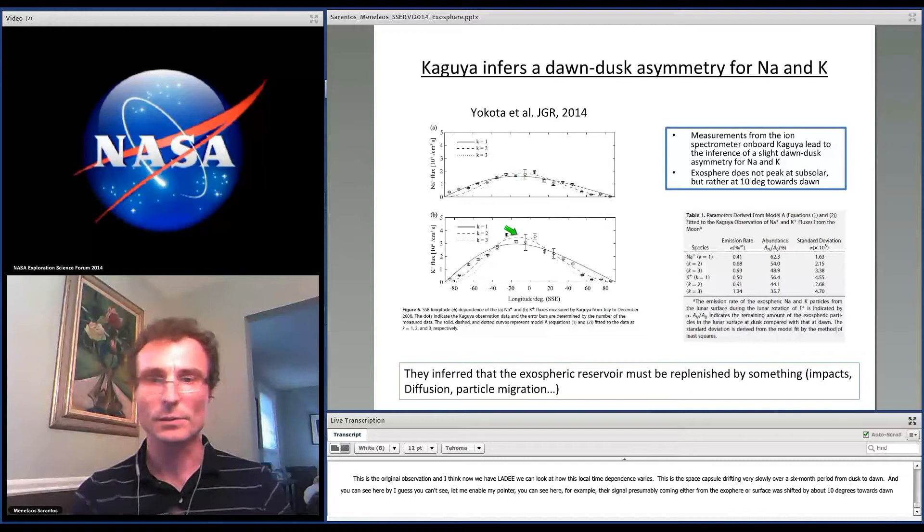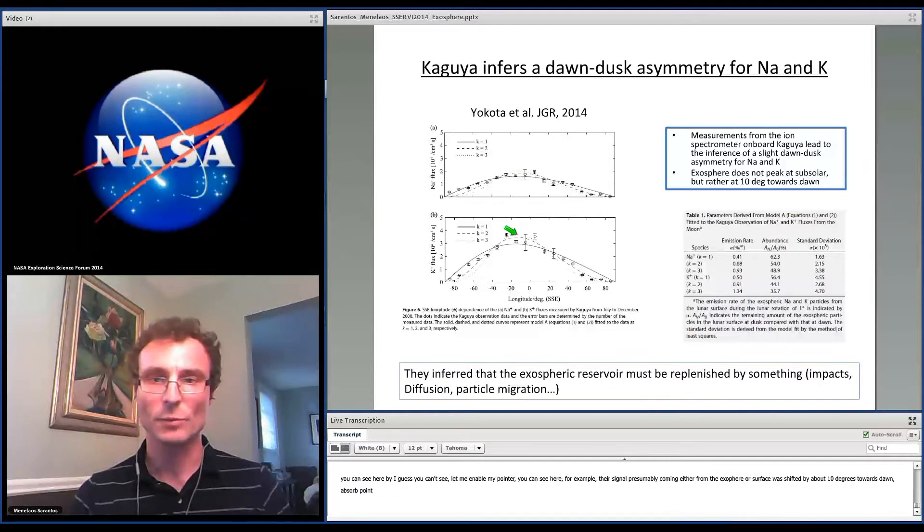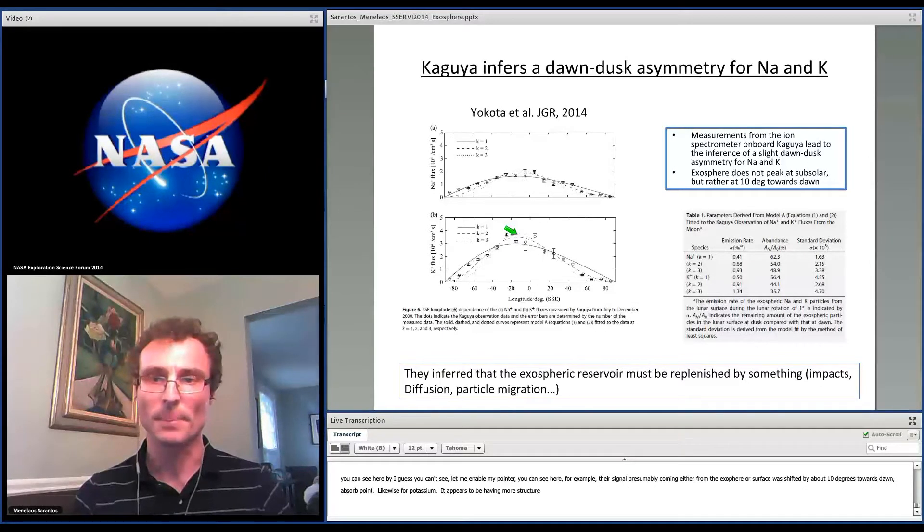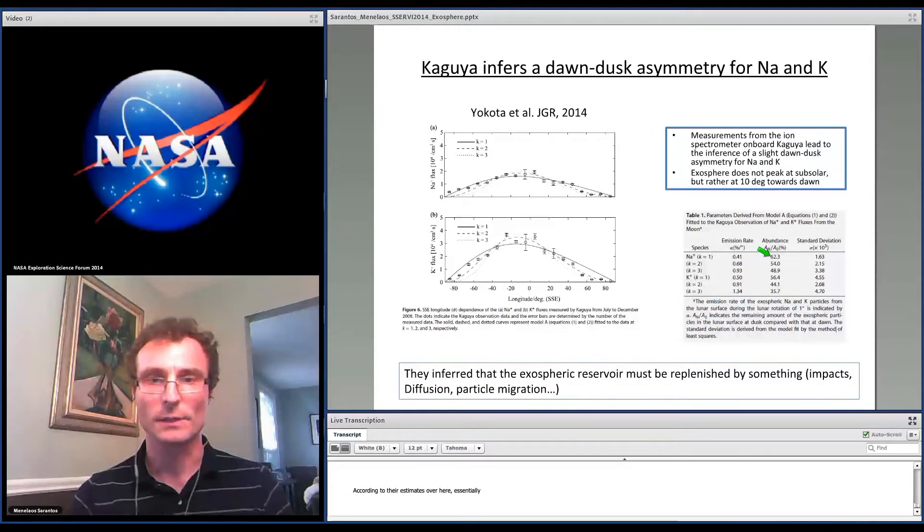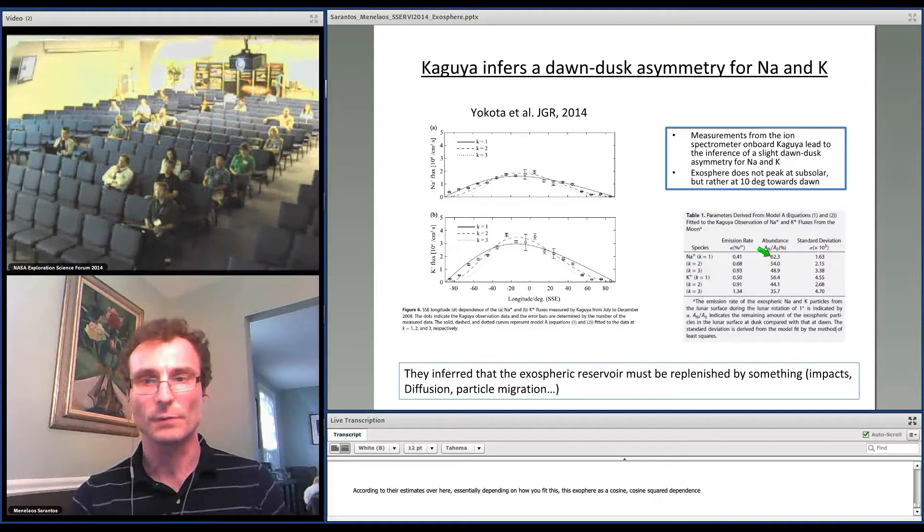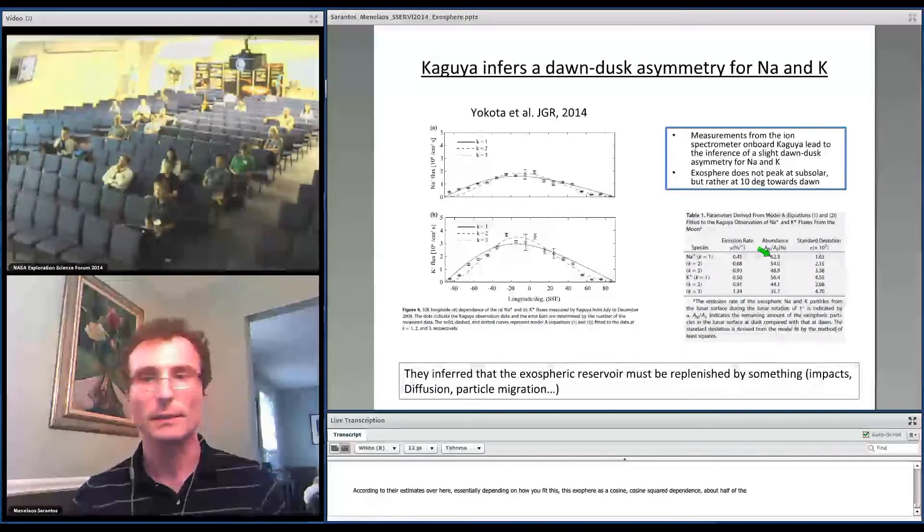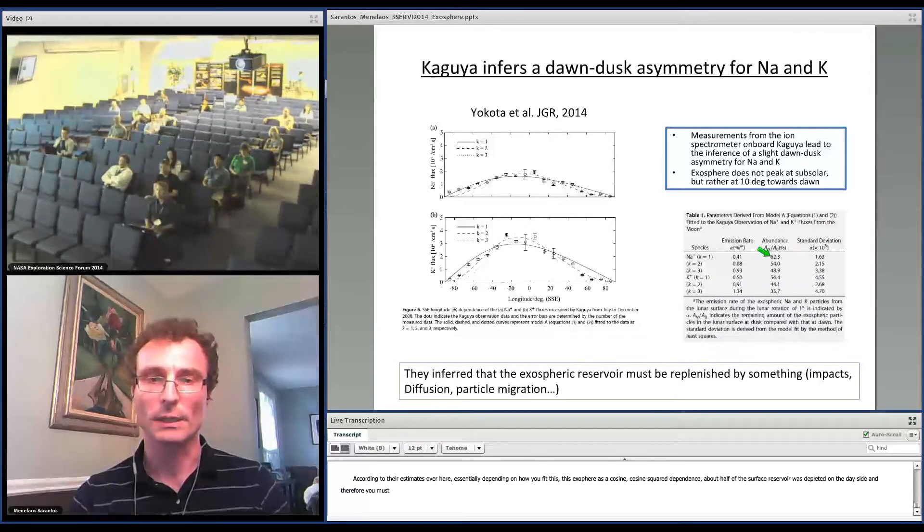Likewise for potassium, potassium appears to be having more structure, and I think this is consistent with models that I will show later on. According to their estimates, essentially depending on how you fitted this exosphere as a cosine or cosine square dependence, about half of the surface reservoir was depleted on the day side.